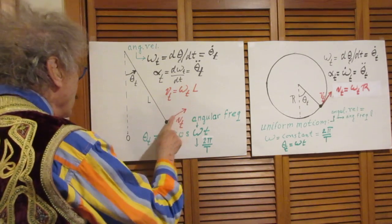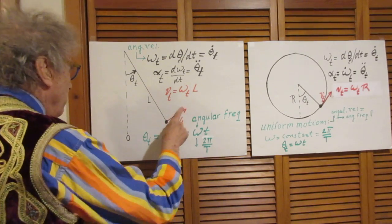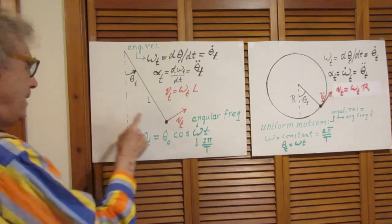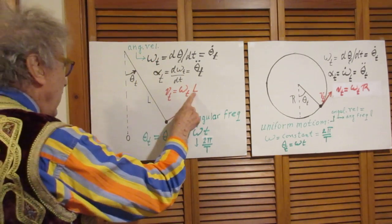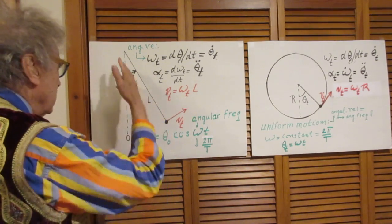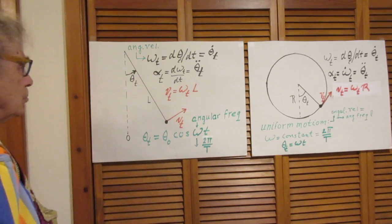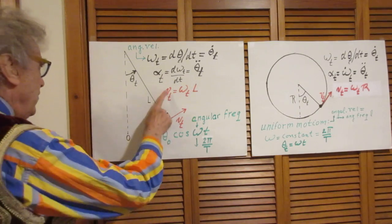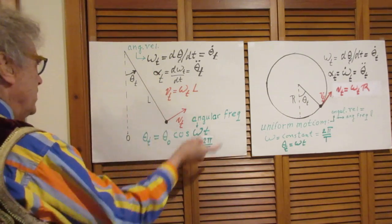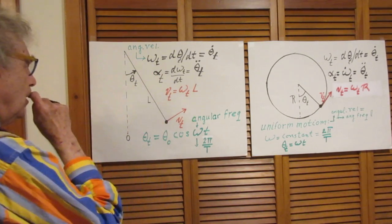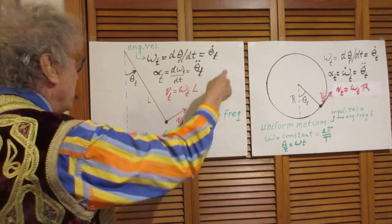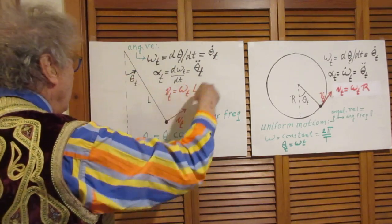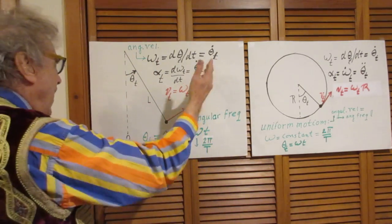The linear velocity, call that speed if you want to, at any moment in time, is this angular velocity times l. That's simply a matter of geometry. This is in meters per second. So this is the linear velocity and that's angular velocity. This all is internally very consistent and very reasonable.